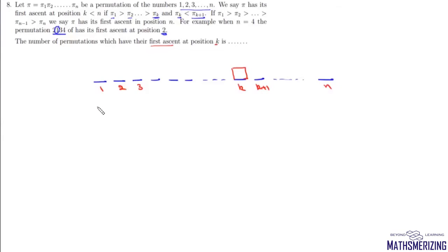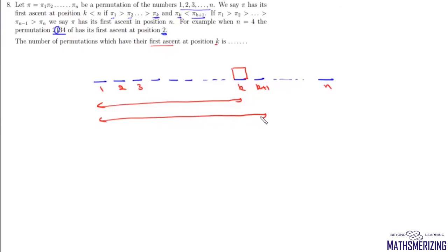To solve this, we use an exclusion approach. We take k numbers arranged in descending order, and subtract the case of k+1 numbers arranged in descending order. This difference gives all permutations where the first k numbers are in descending order but the (k+1)-th number is not in descending order — meaning at position k+1 there is a number greater than the number at position k.